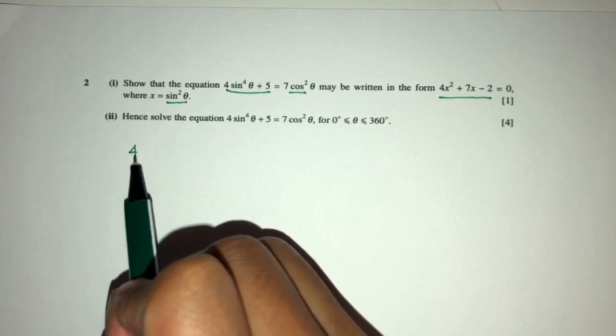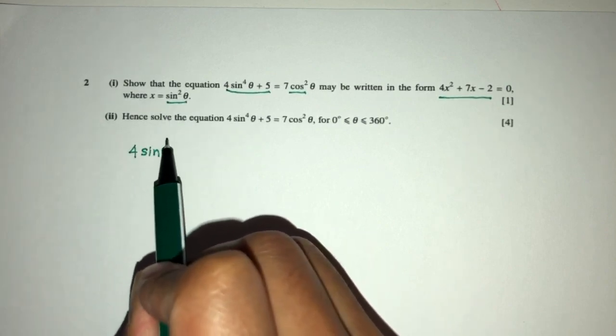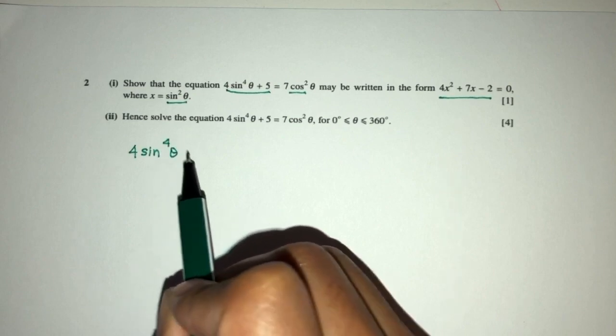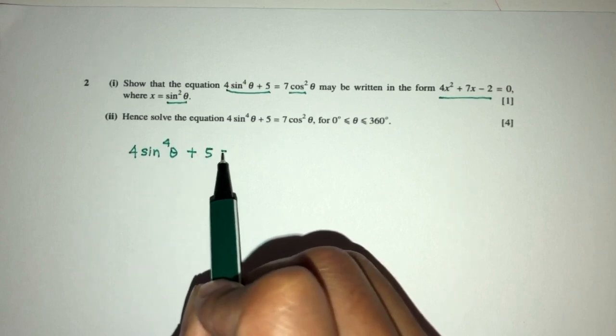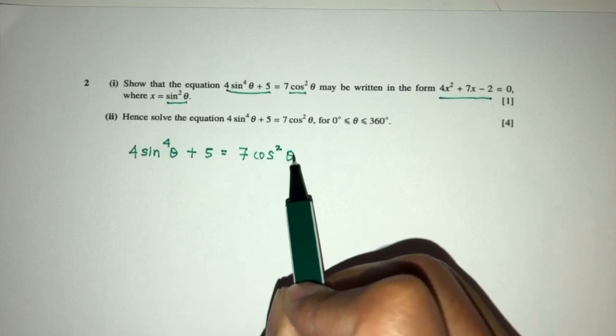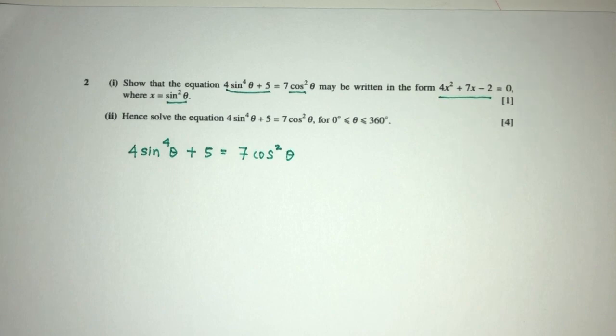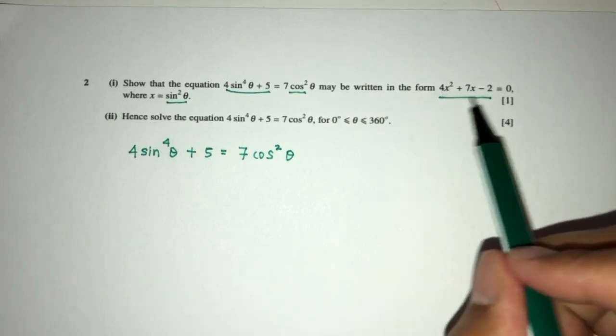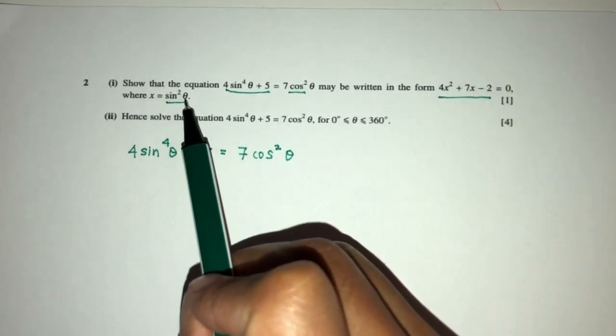At first we have 4sin⁴θ + 5 = 7cos²θ. Now we have to kind of understand in this equation here we have x, x is sin²θ.